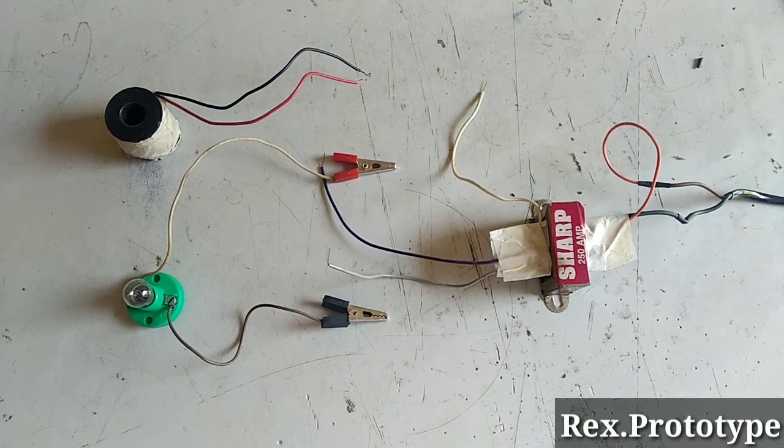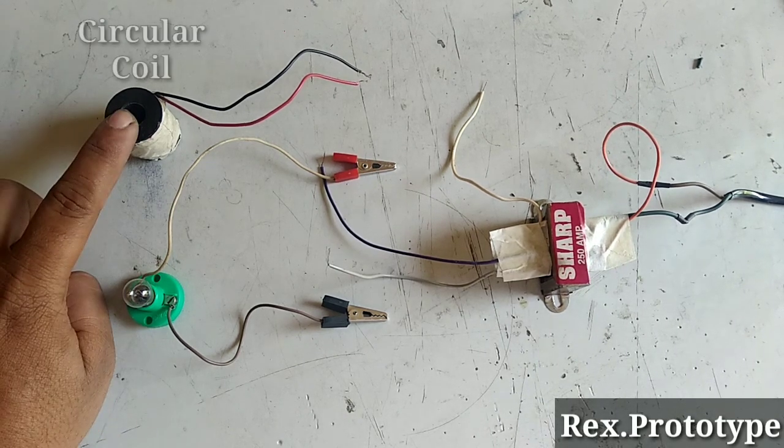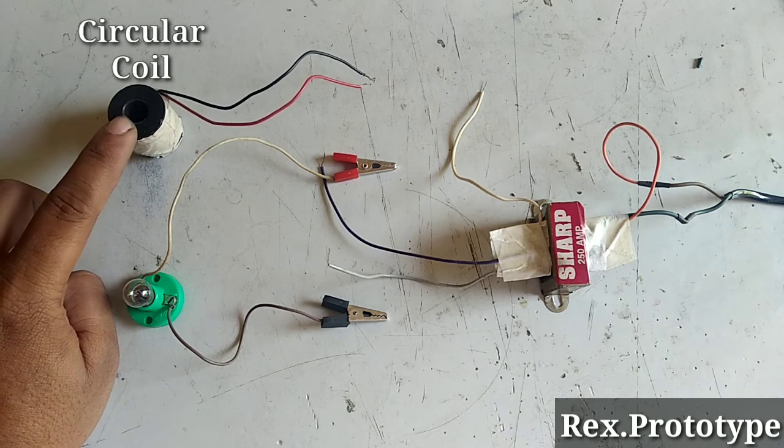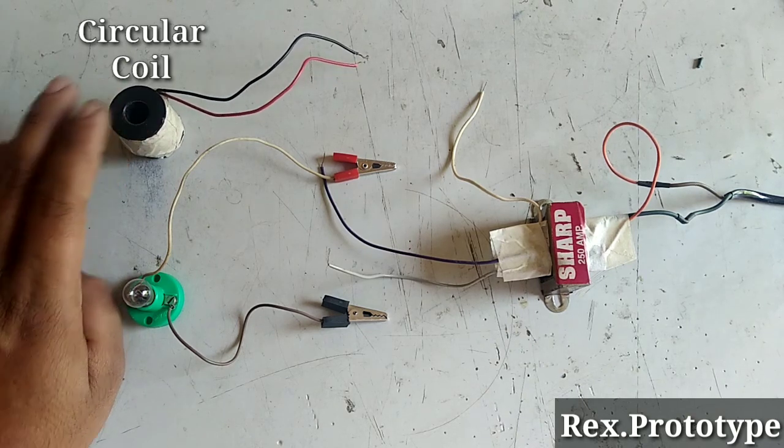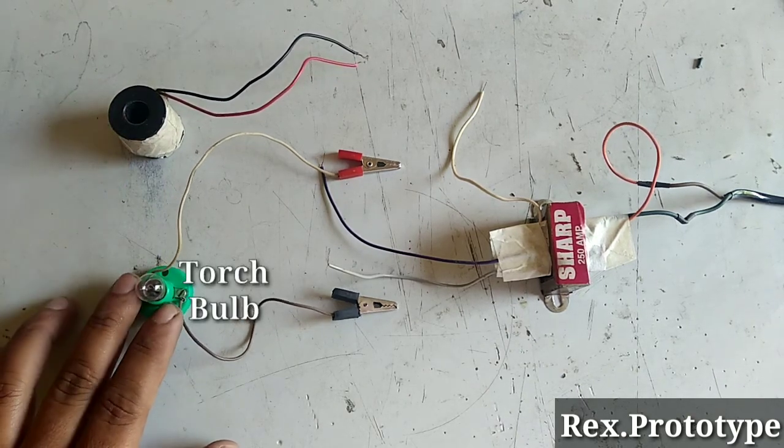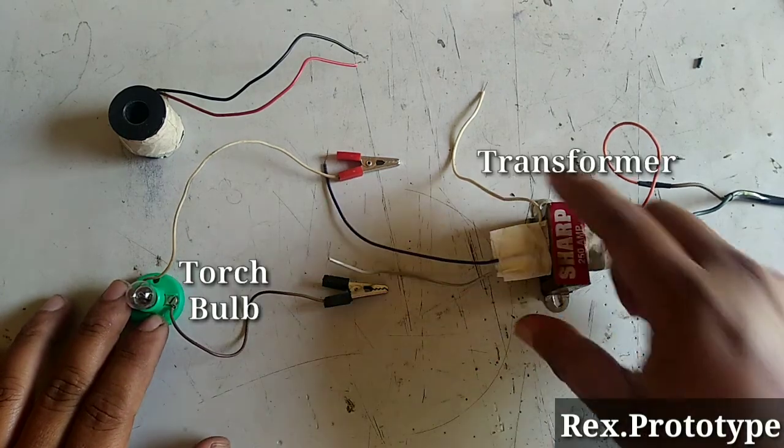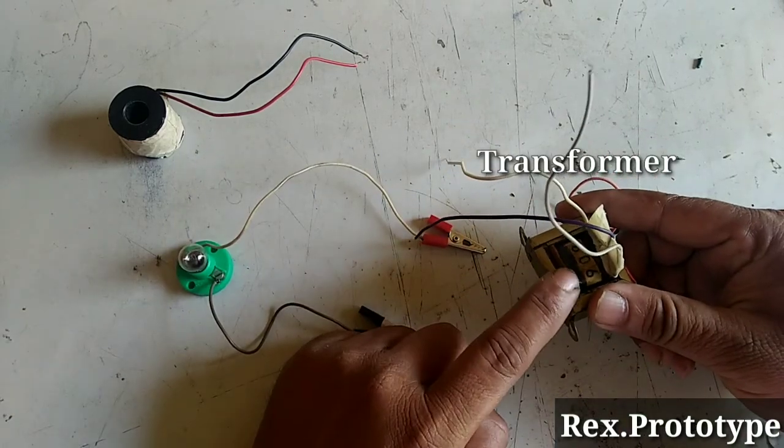In this video, we will demonstrate the self-induction of this circular coil having about 400 turns. This is a torch bulb and this is a 606 transformer.